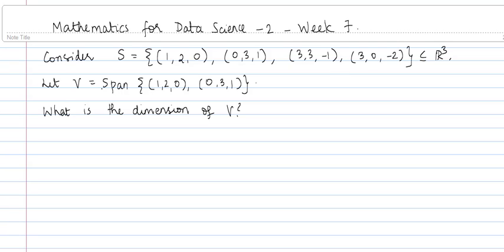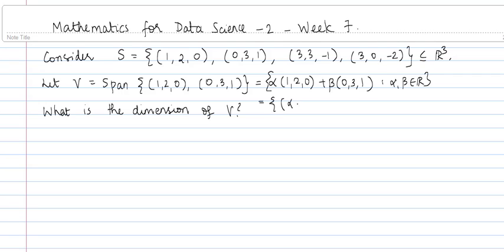Let us consider the set V, which is the span of these 2 elements: (1, 2, 0) and (0, 3, 1). V can be represented as alpha times (1, 2, 0) plus beta times (0, 3, 1), where alpha and beta are real numbers. This is nothing but the set of vectors (alpha, 2*alpha + 3*beta, beta) such that alpha, beta belong to R.